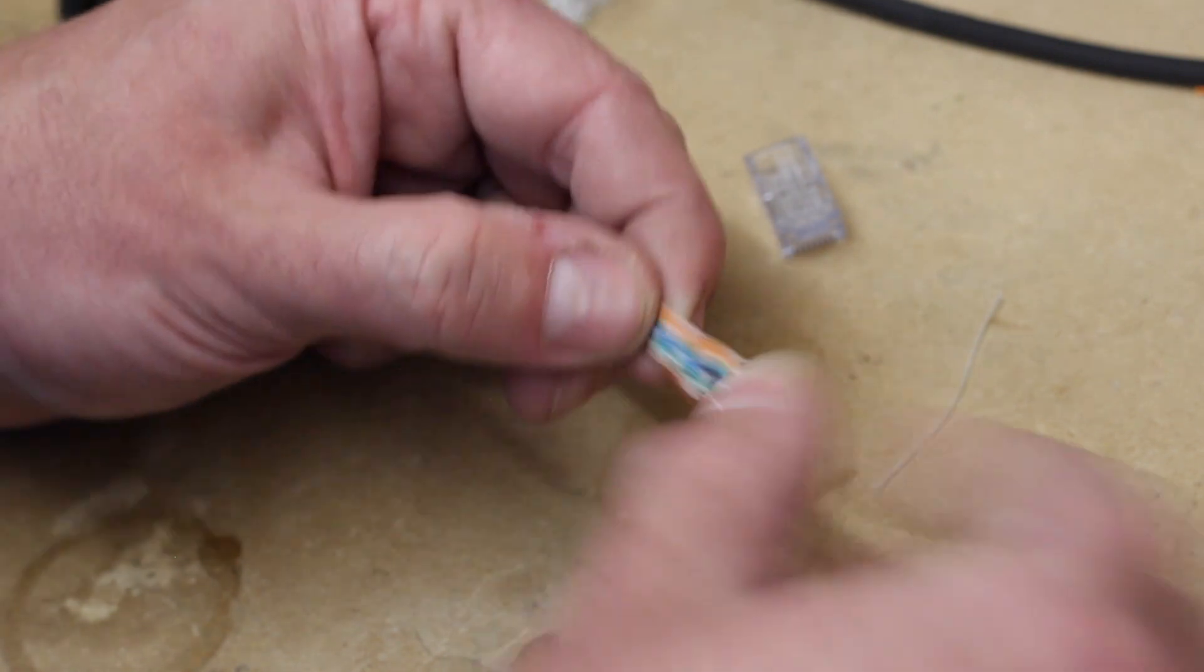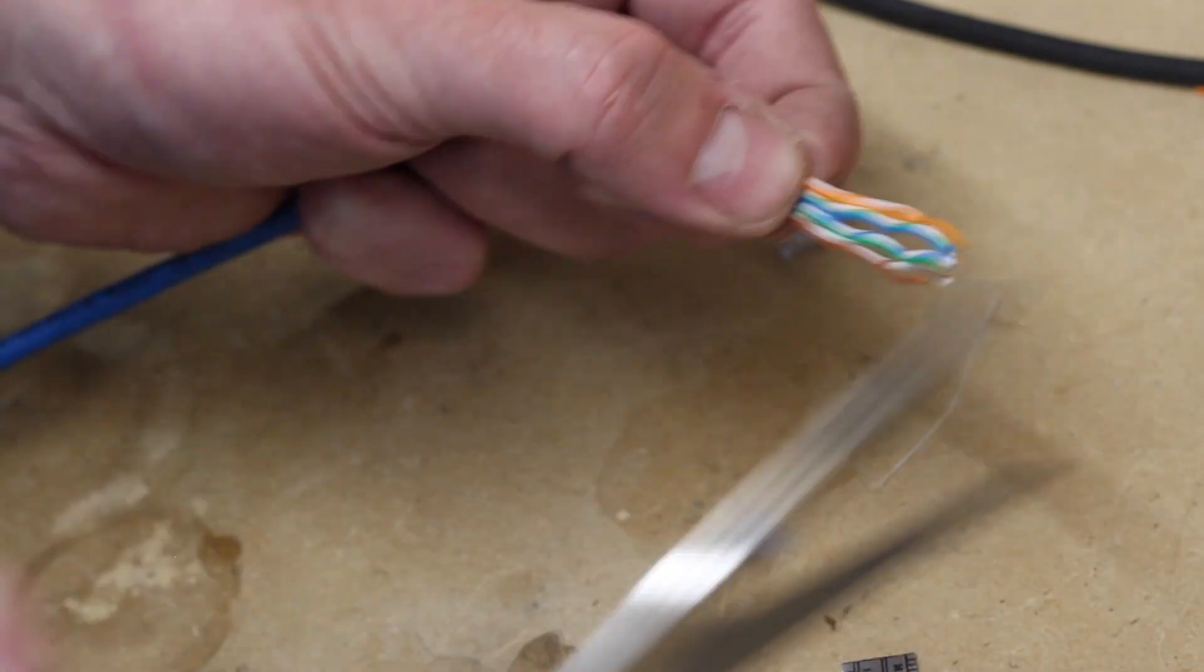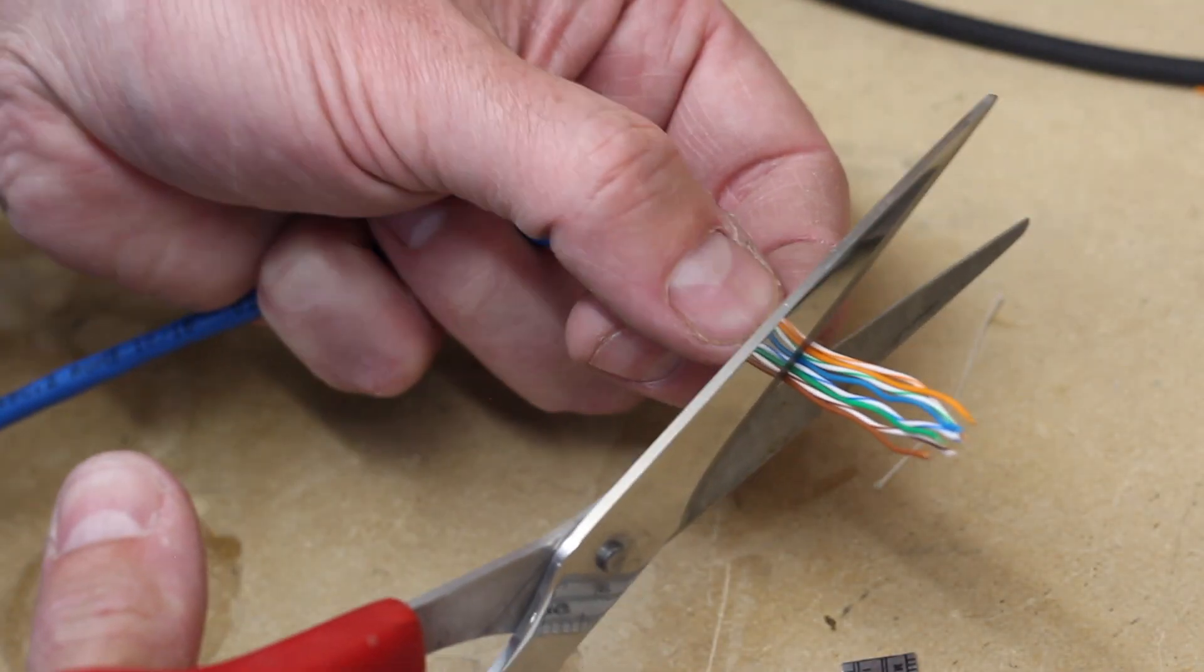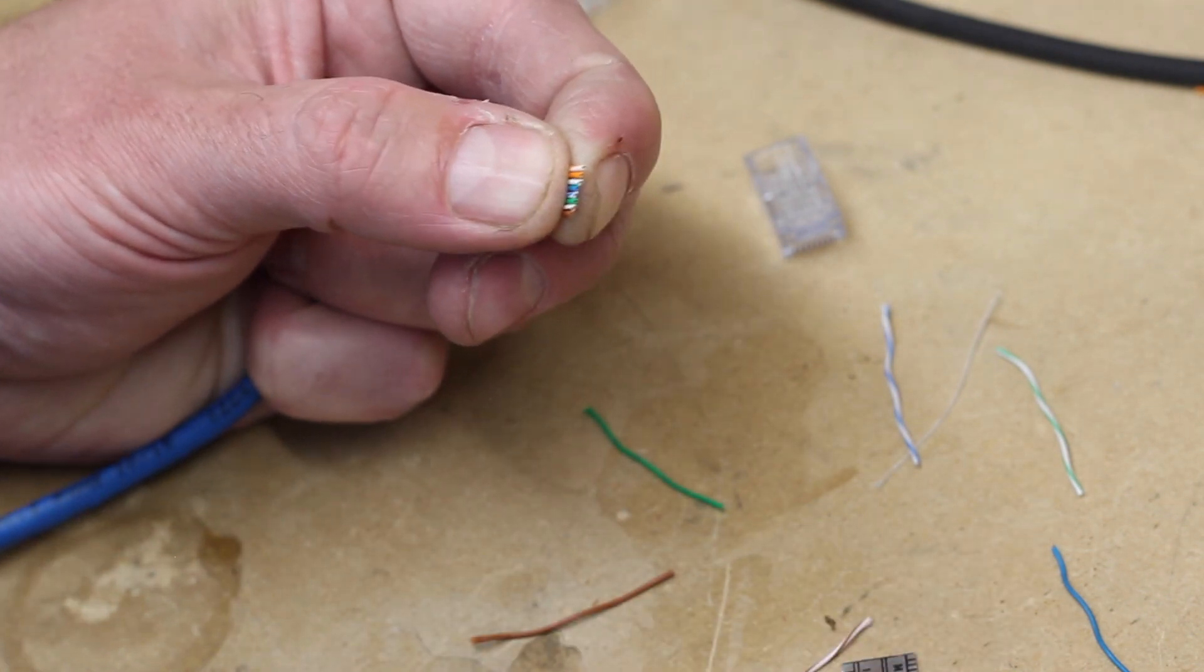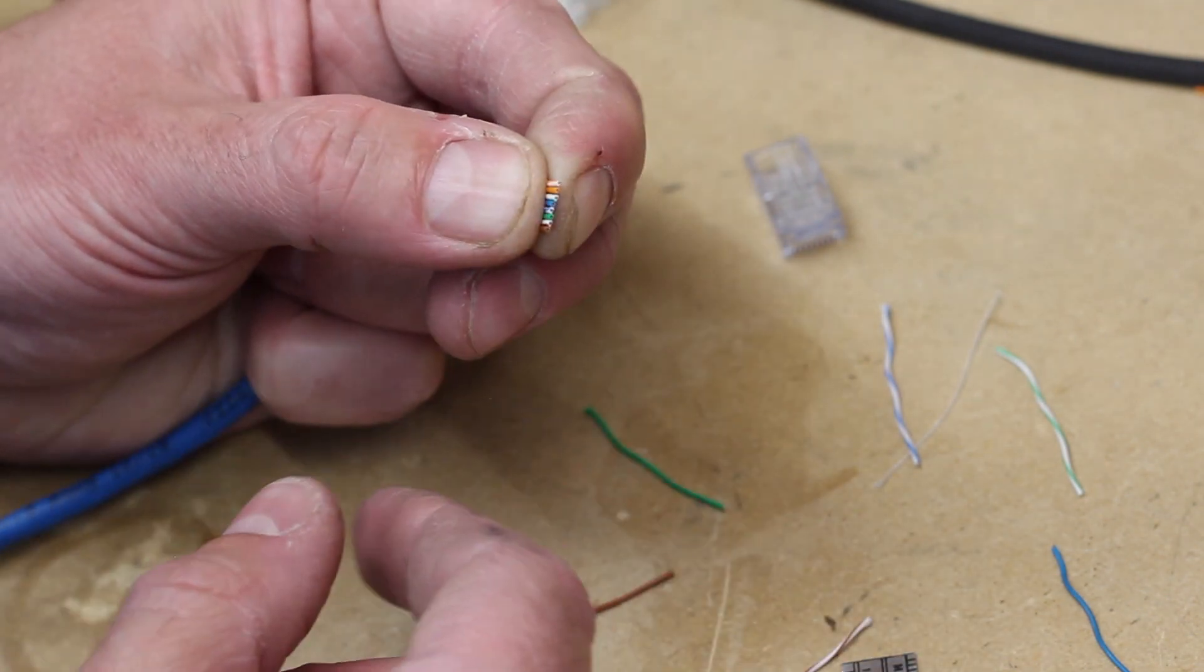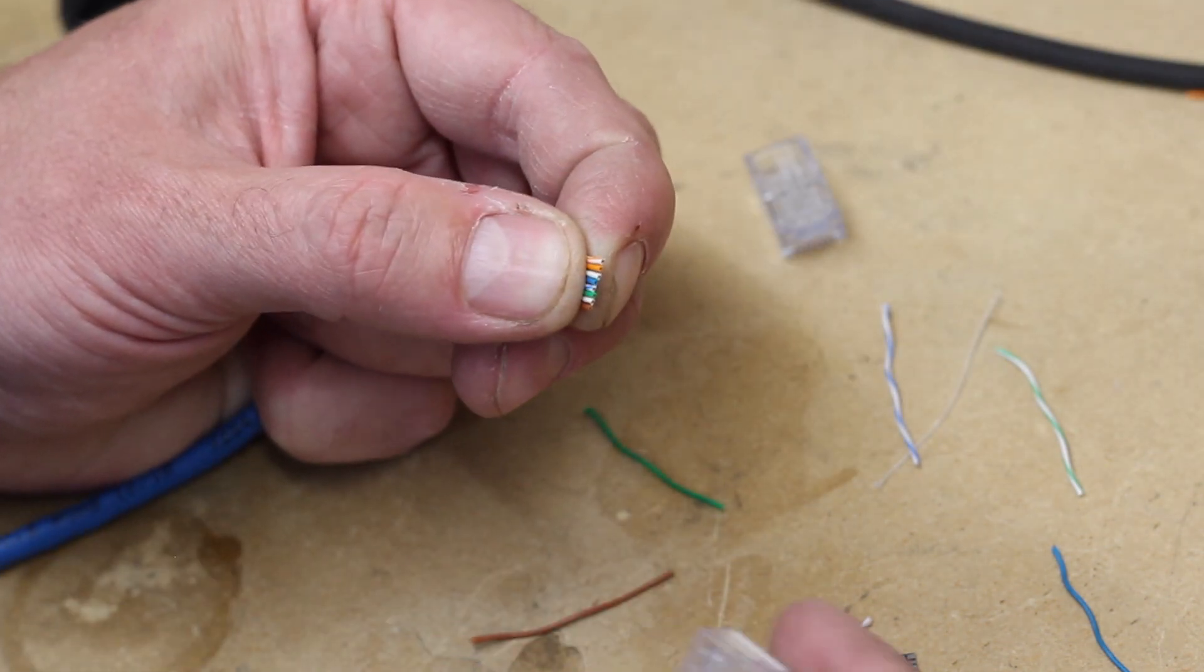And then you can cut it. Now you take your mom's sewing scissors and trim this to the length required for your connector, which is about that far. I like to use scissors rather than wire cutters. Wire cutters tend to mash the ends and you don't want to mash the ends.